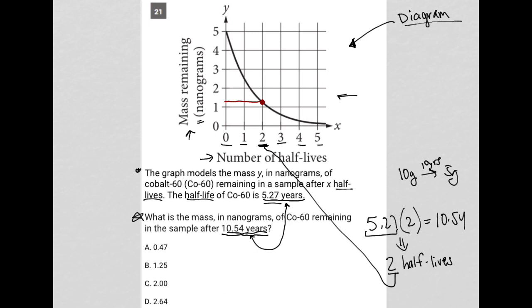That's what our answer should be. So, answer choice A says 0.47, definitely not correct. Choice B says 1.25, I like that. Choice C says 2, that's too much. Choice D says 2.64, that's also too much. So, choice B is the best answer here.